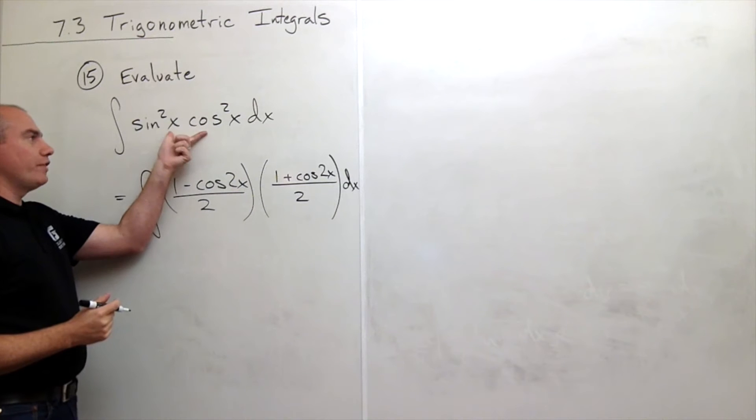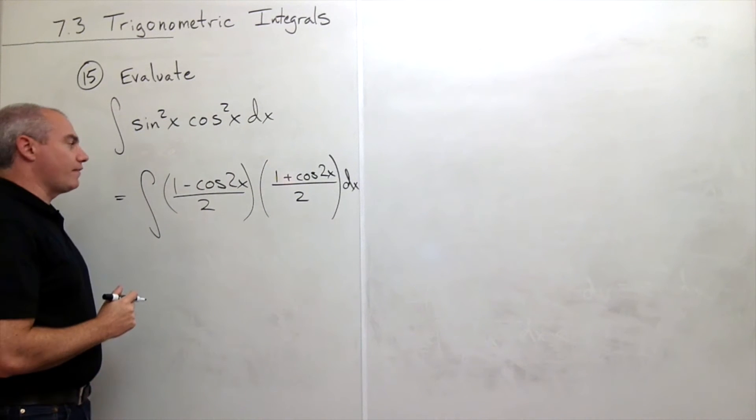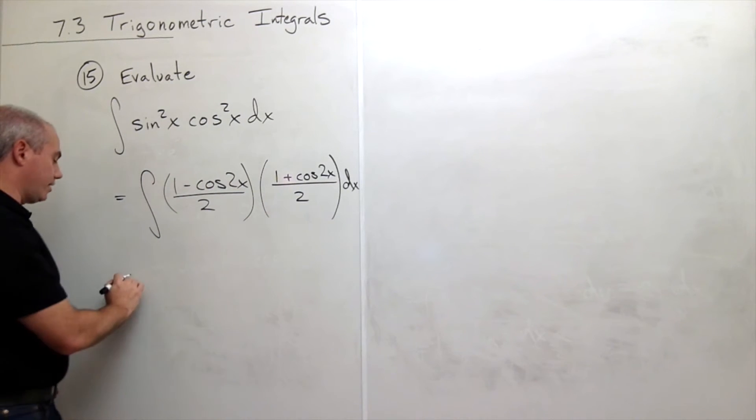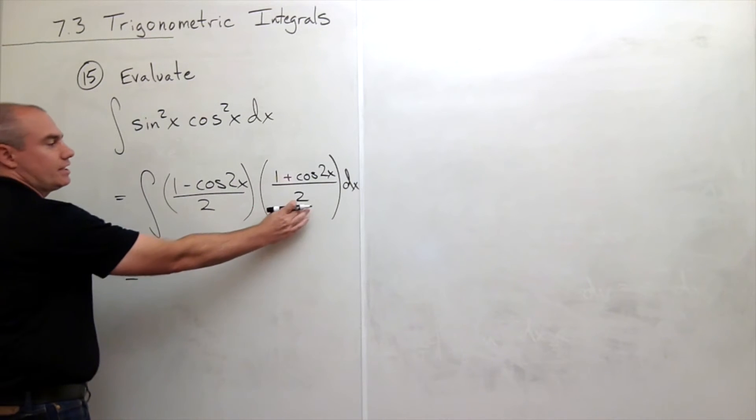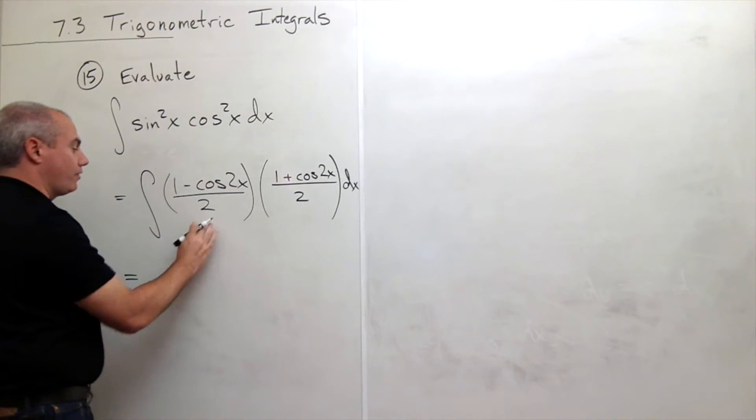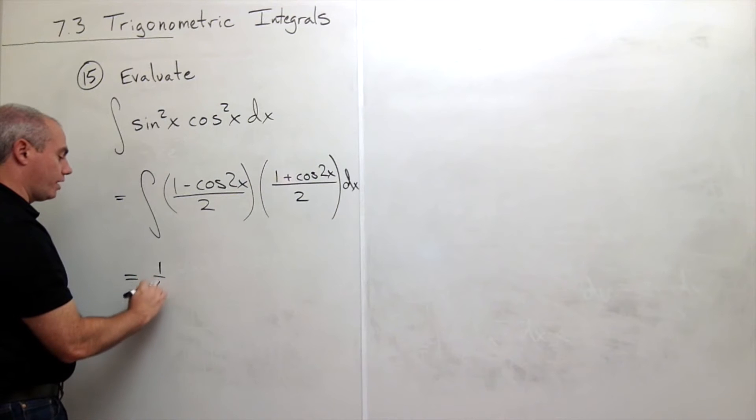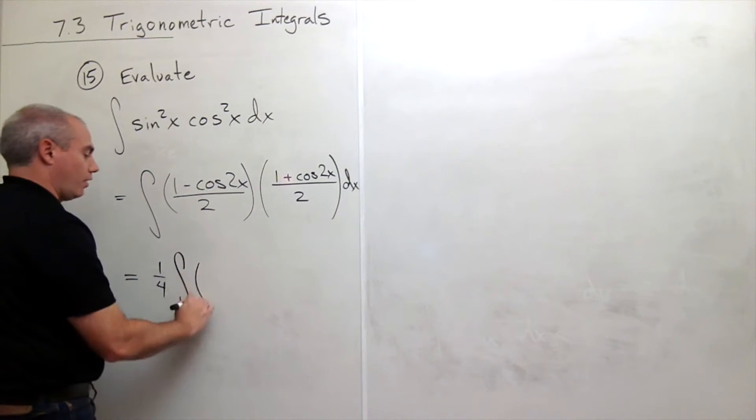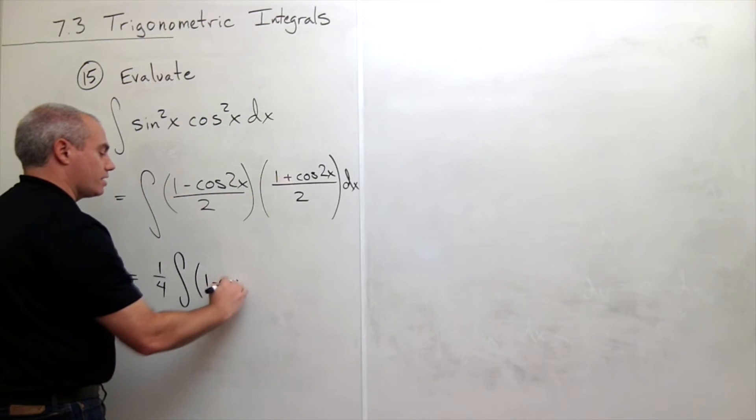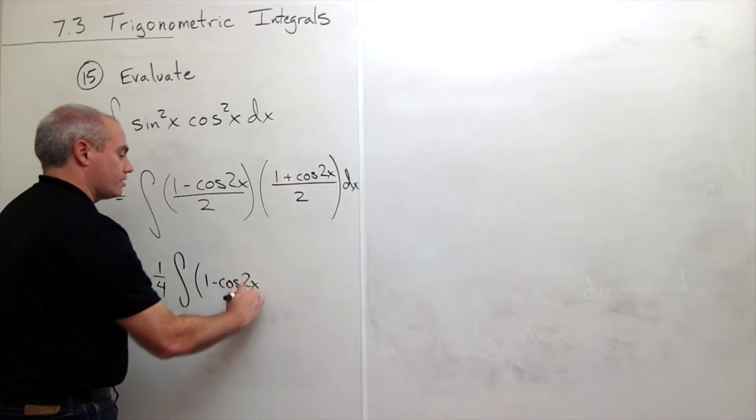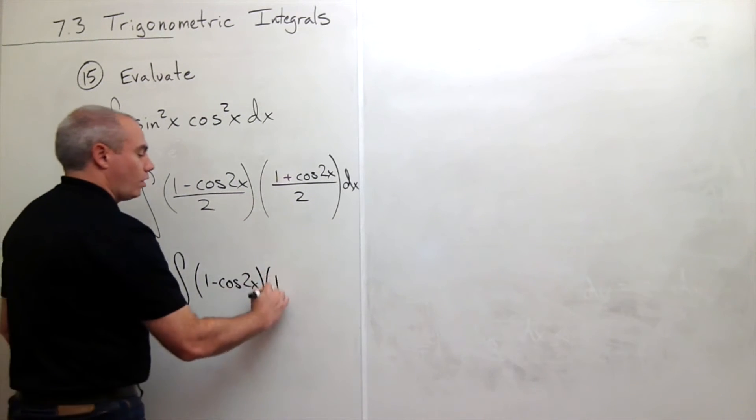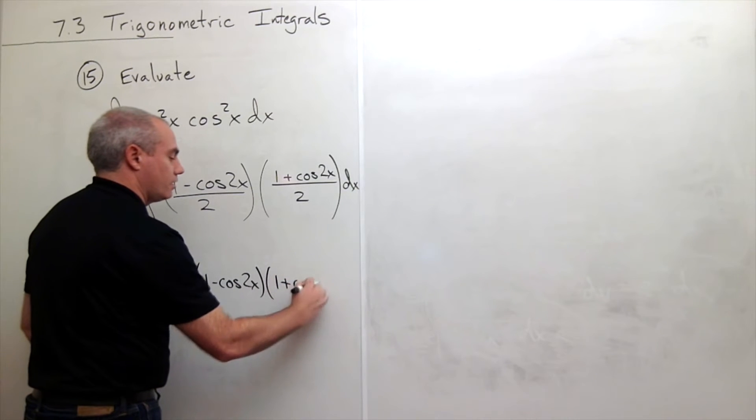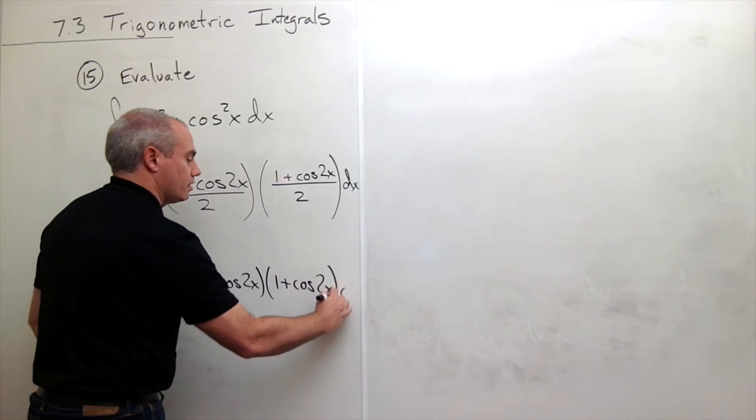I've just rewritten the integral using the half angle identities. The next thing I'll do is get these halves out of the integral and write it out front as a 1 fourth. So I have 1 fourth the integral of 1 minus cosine of 2x times 1 plus cosine of 2x dx.